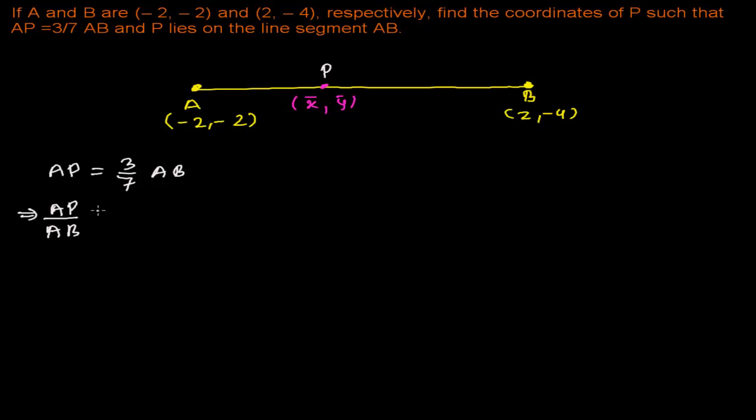Means if this whole AB, if I'm going to make this whole AB 7 sections, if I'm going to make here AB 7 sections, then AP is going to carry 3 sections. So if there are 7 sections, so let me draw here 7 sections. It's 1, 2, 3, 4, 5, 6 and 7.